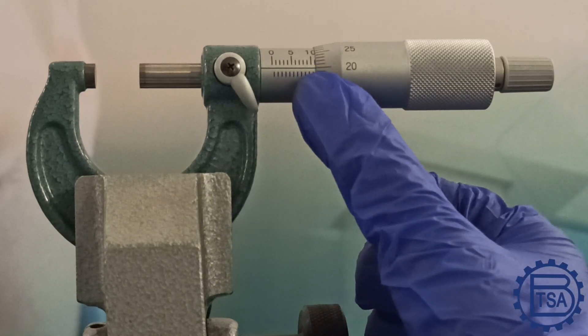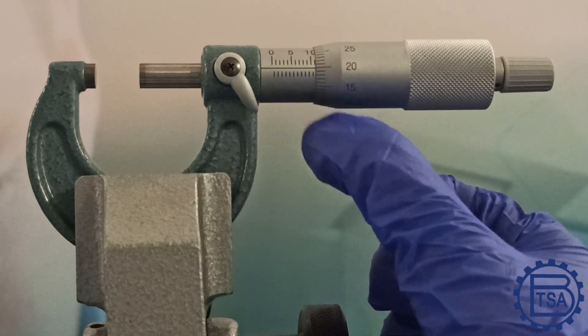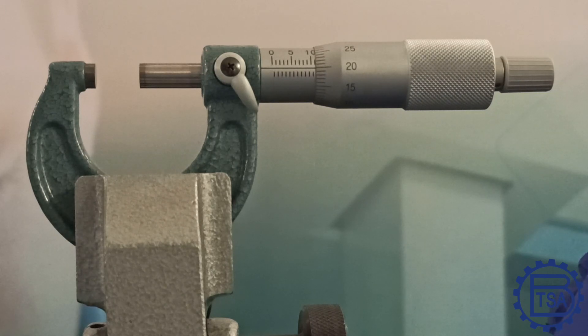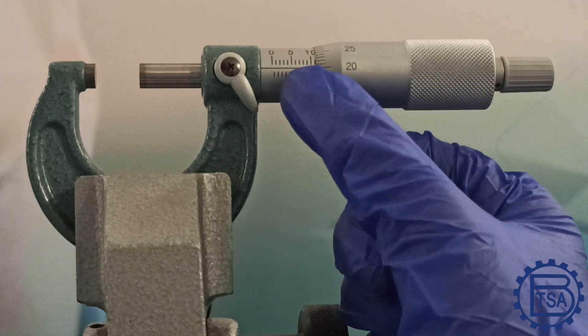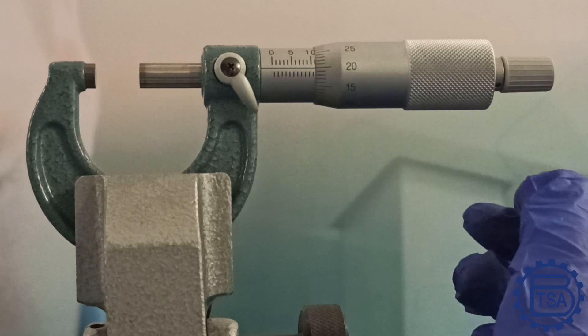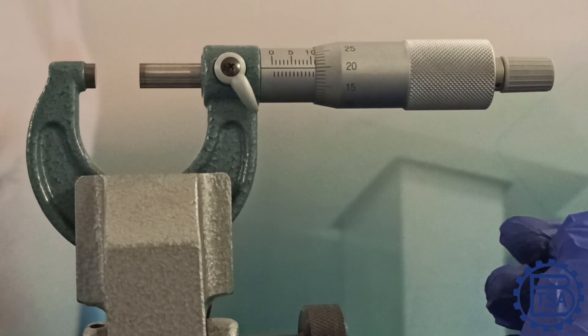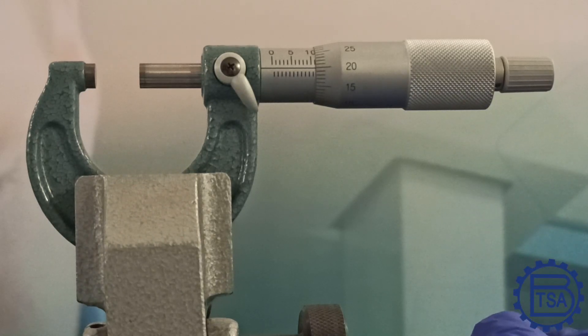We must match the line on the thimble with the line on the main scale to determine the reading. For example, here the reading on the thimble is 20, which is matching the main scale reading. Hence the decimal reading is 0.20 mm.